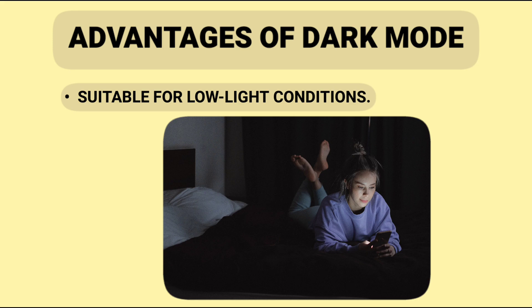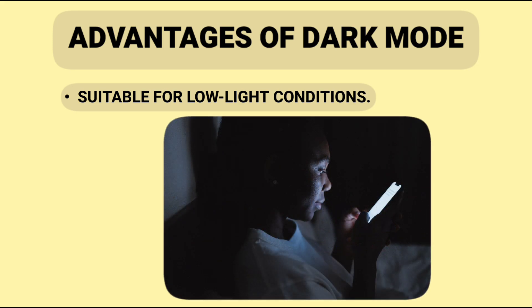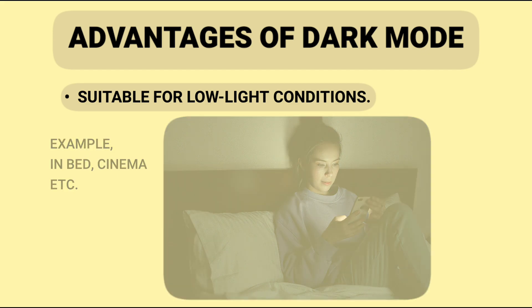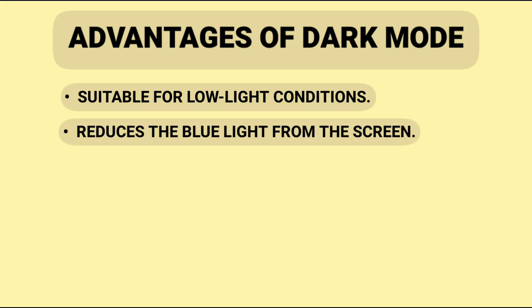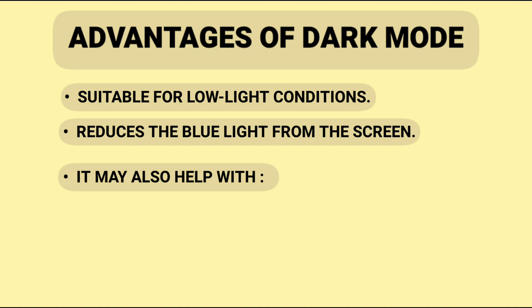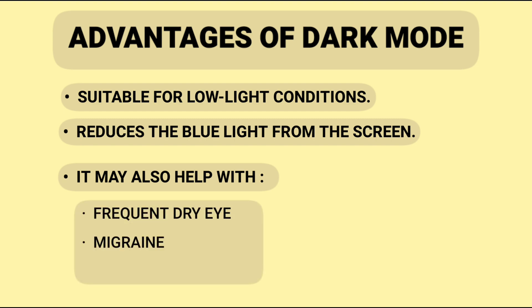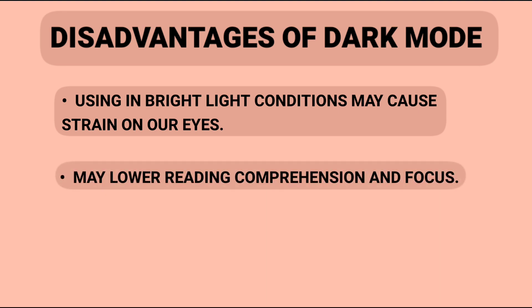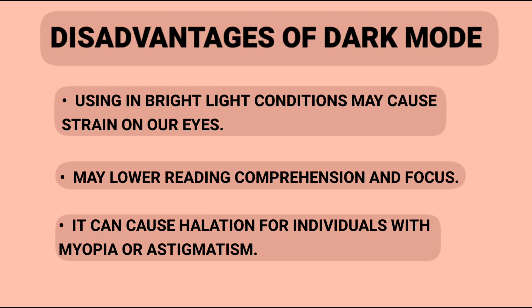Dark mode is suitable for low light conditions, especially when you don't want your phone to be a beacon of light — for example, in bed or a cinema. Dark mode reduces the blue light from the screen. It may also help with frequent dry eye, migraine, and visual disturbances. However, using dark mode in bright light conditions may cause strain on our eyes. Dark mode may lower reading comprehension and focus, and can cause halation for individuals with myopia or astigmatism.